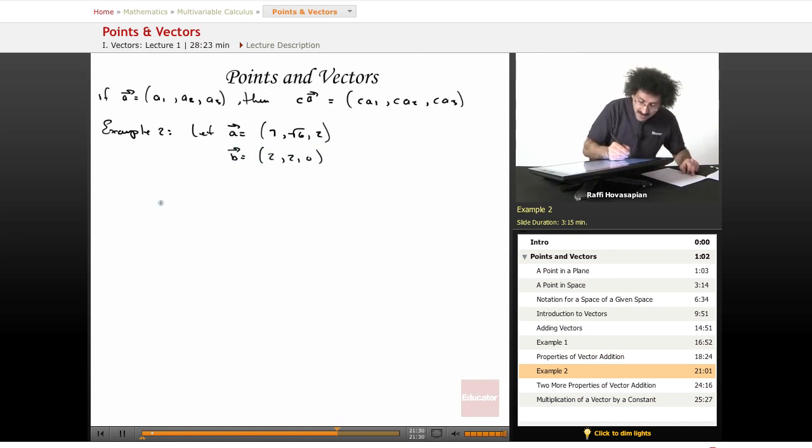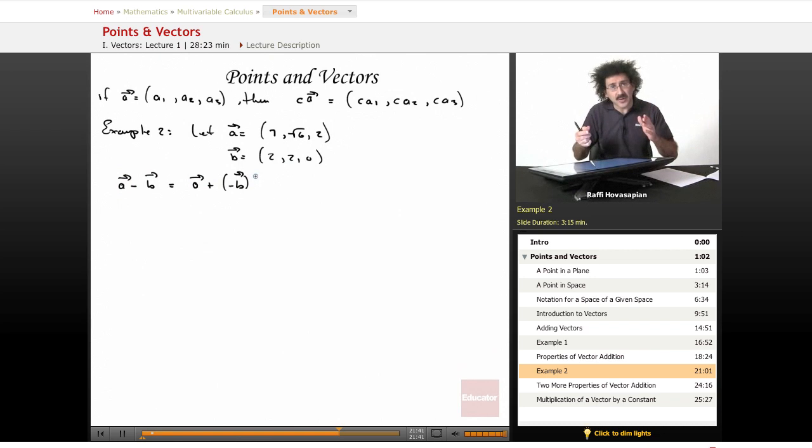Let's do A minus B. The vector A minus B, that's equal to the vector A plus the vector minus B. Because you know that there is no such thing as subtraction in mathematics, as it turns out. There's only one operation in mathematics, that's addition. Subtraction is addition of the inverse of a number.